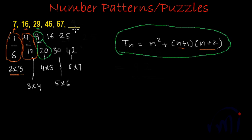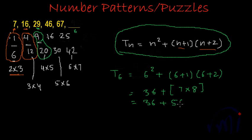So this will be the sixth term and to find the sixth term, what we have to do? We have to find the square of 6 and we have to add it to the product of (6+1) and (6+2). So this will be 36 and this will be 7 and 8, 7 multiplied by 8. So this will be 36 plus 56. 6 plus 6 is 12, 1 carried forward, 1 plus 3 is 4 plus 5 is 9. So this number should be 92.